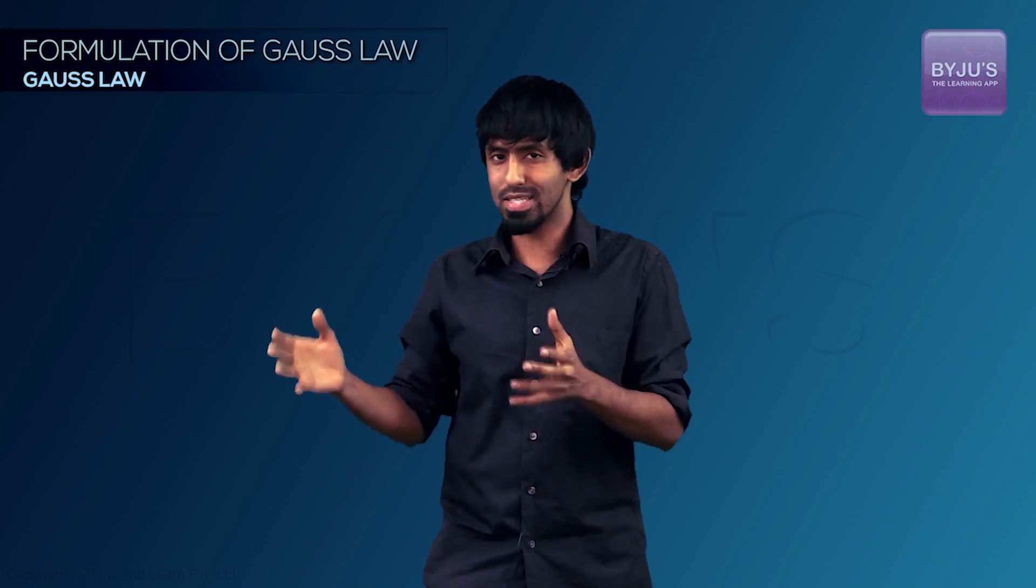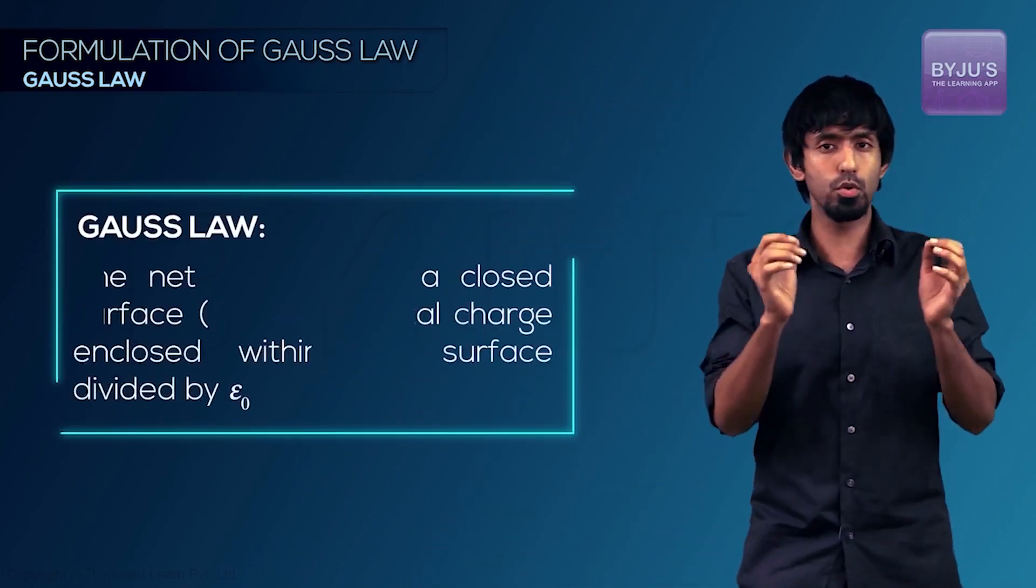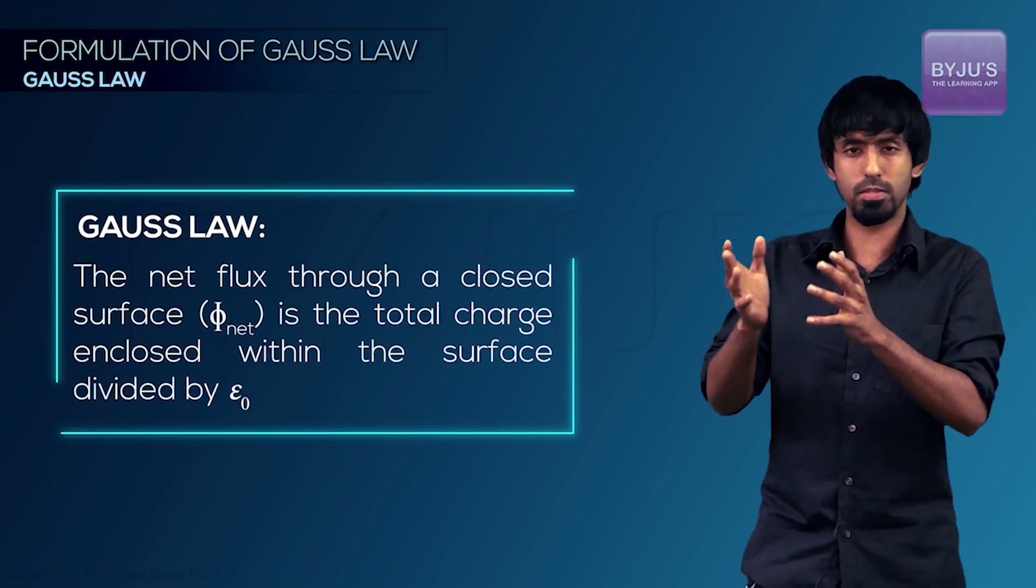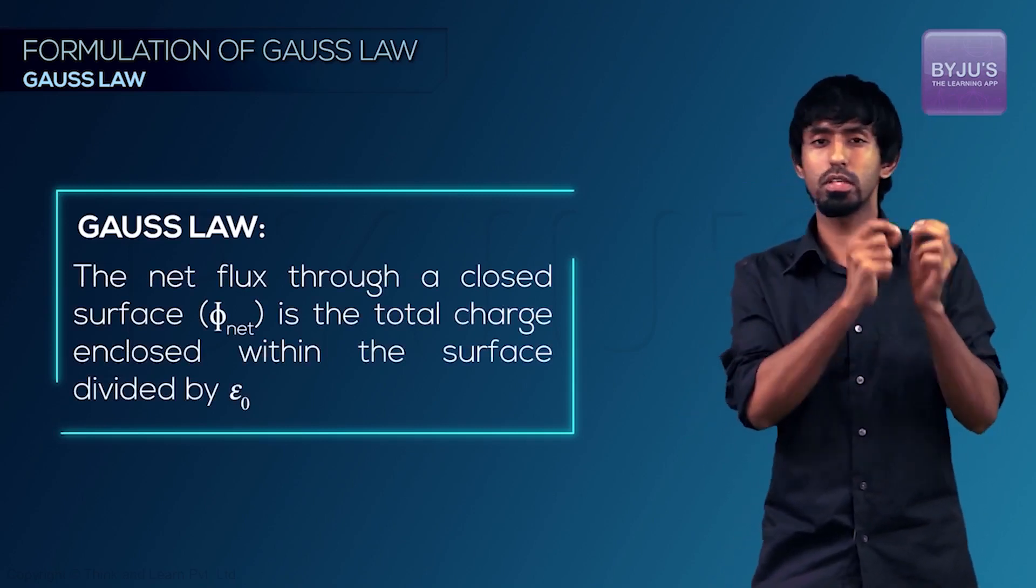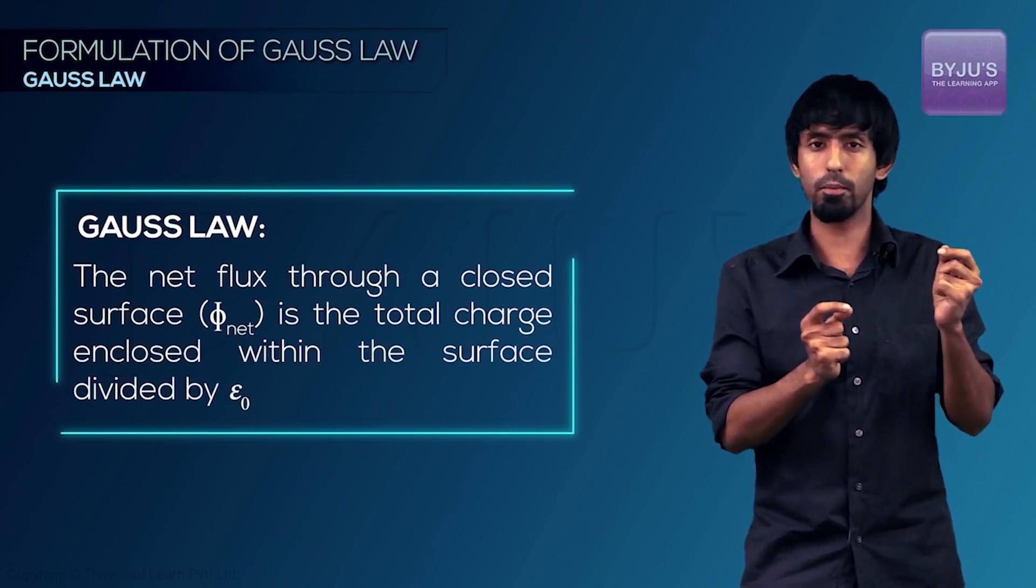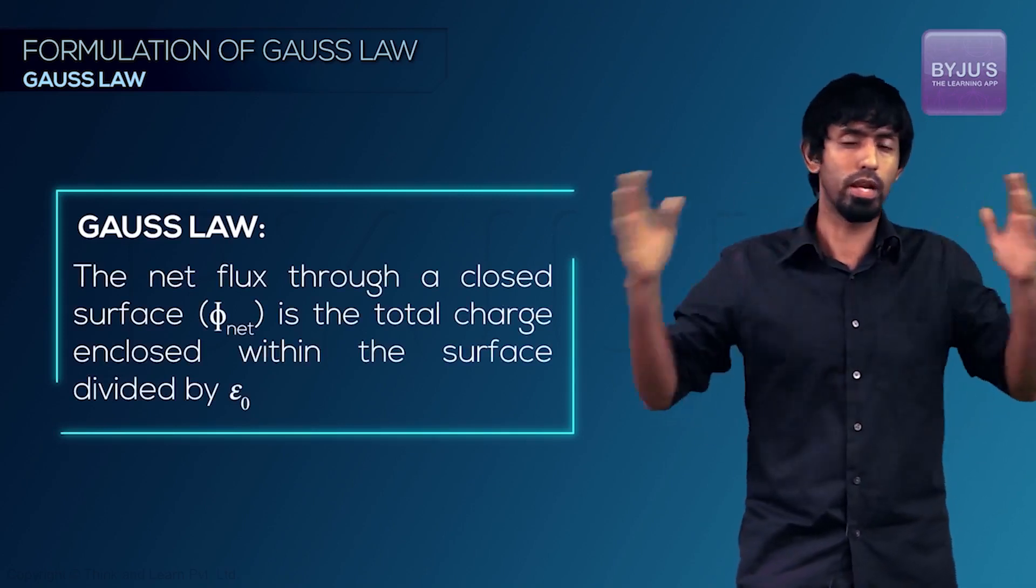And now we're going to formalize that statement in the form of Gauss's law. So what Gauss's law says is that if you have a closed surface, the net flux through that equals the total charge enclosed within that closed surface divided by epsilon-naught, if this whole thing happens in vacuum.